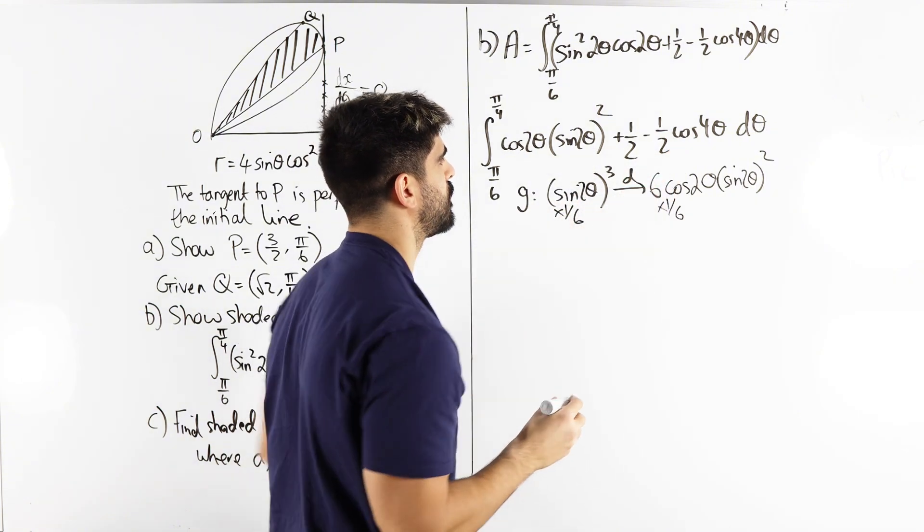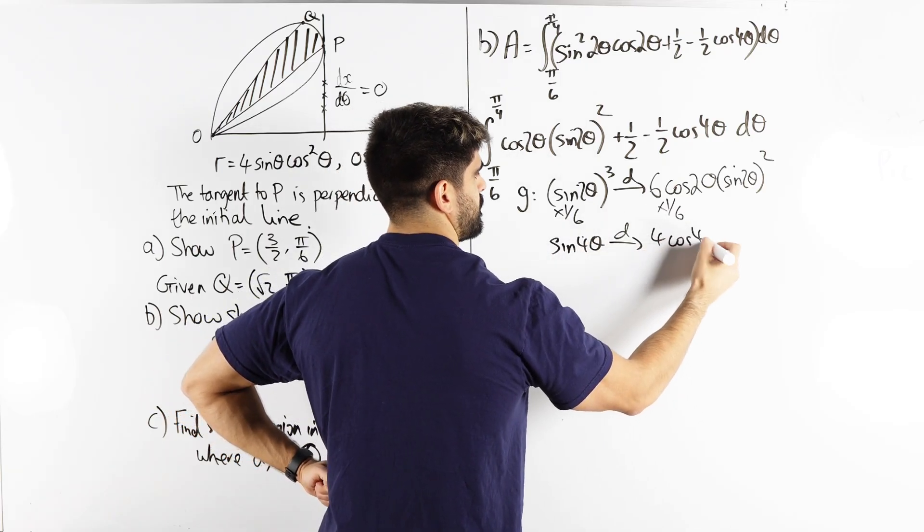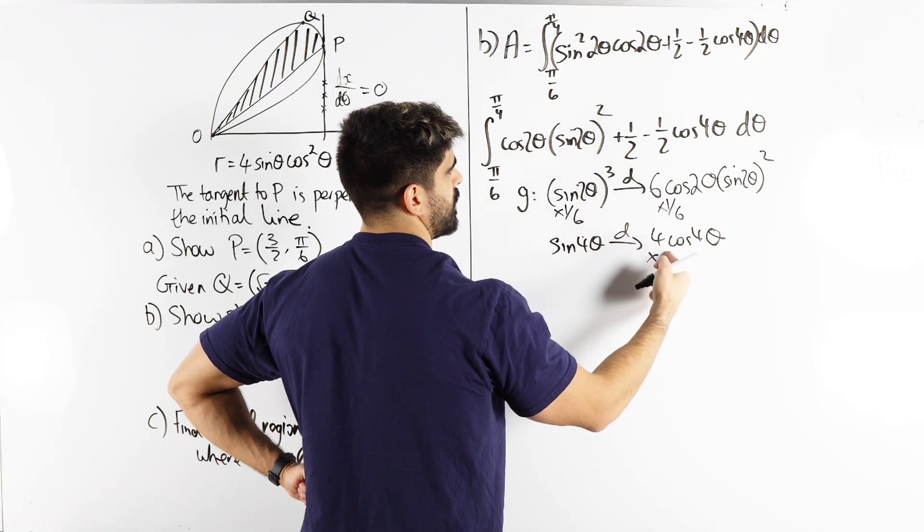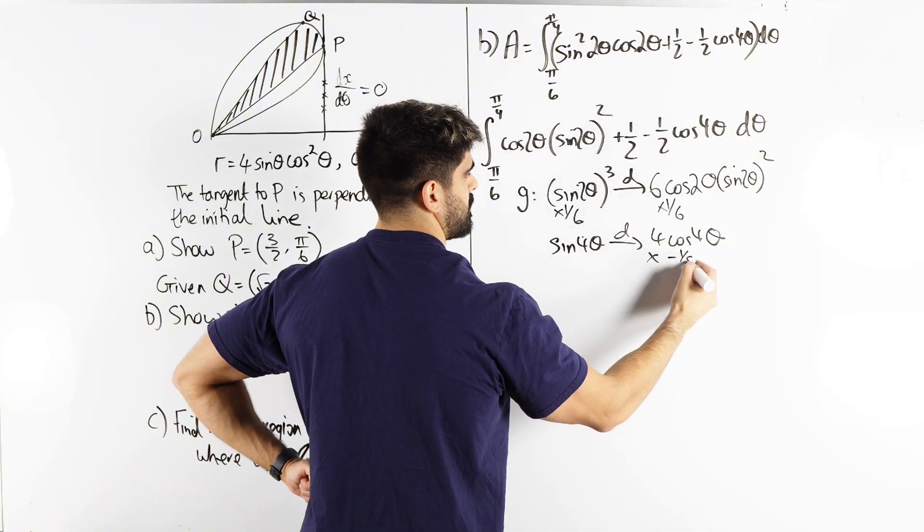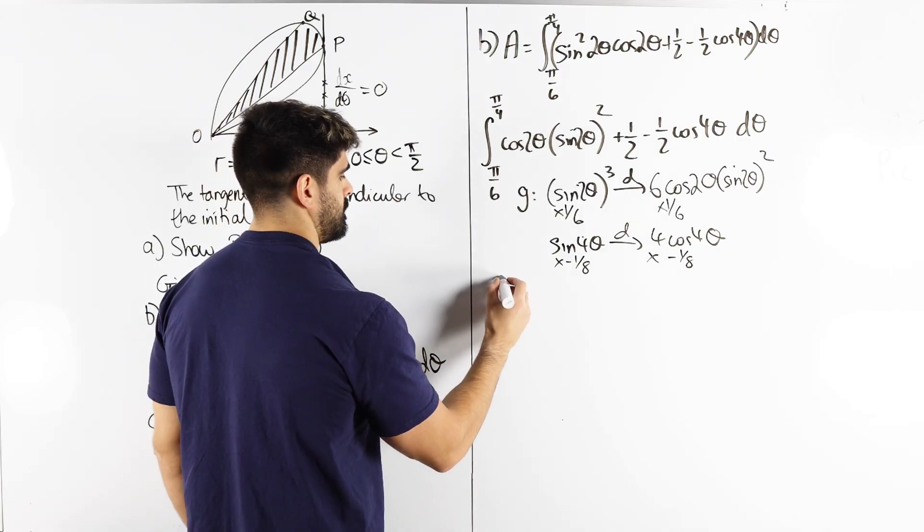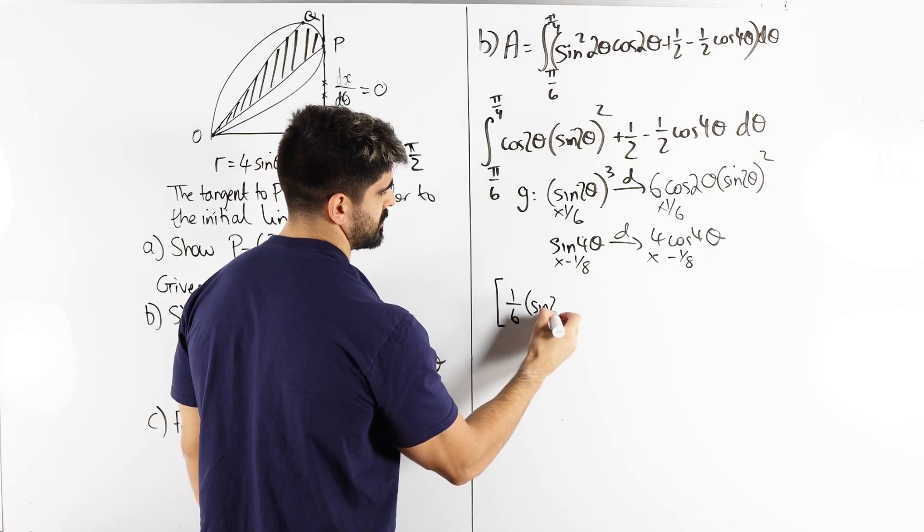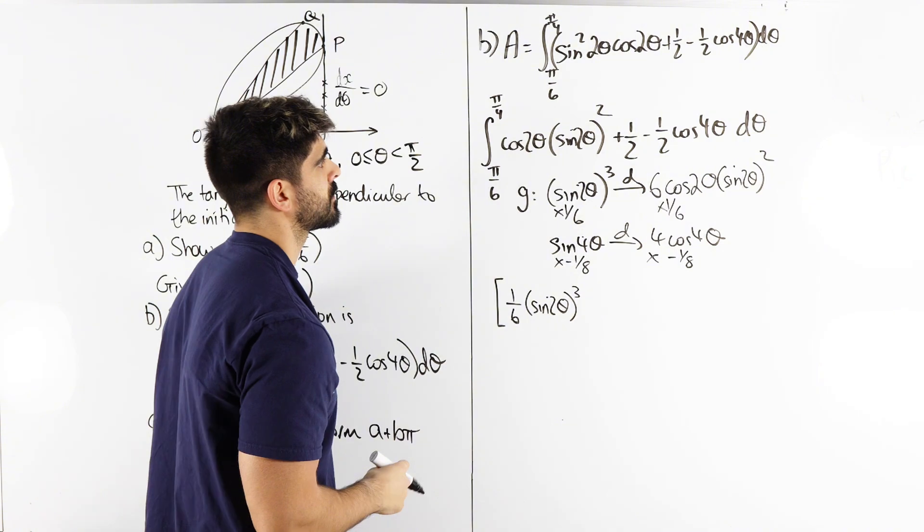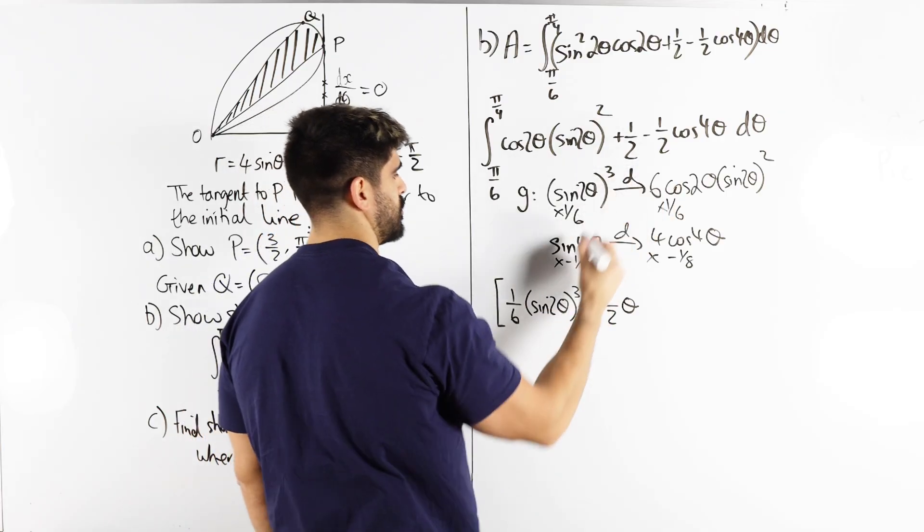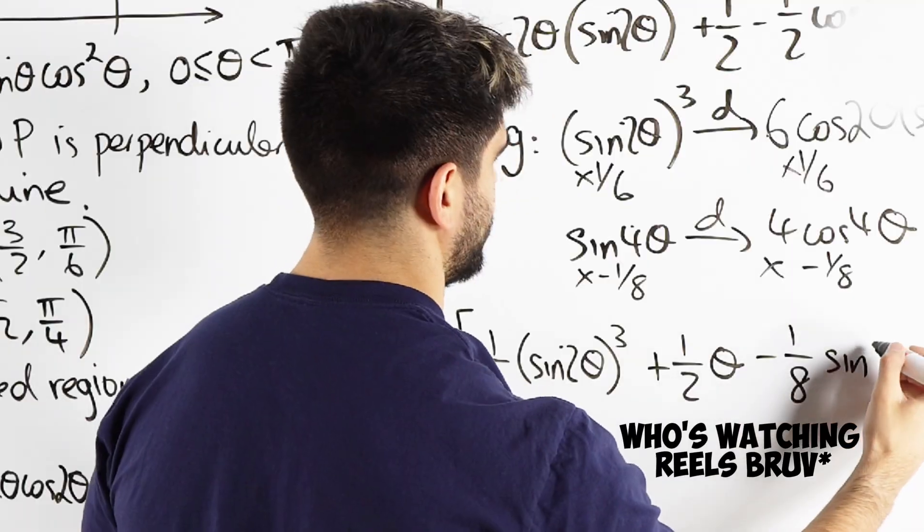A half is easy. Cos four theta my guess is sine four theta. We differentiate to check that becomes four cos four theta. But we wanted minus a half. So it's always what you want. So you times both sides by what you want divided by what you have. Minus a half divided by four is minus an eighth. So we get that integrates to one sixth sine two theta cubed minus a half goes to a half theta. And that goes to minus one eighth sine four theta.